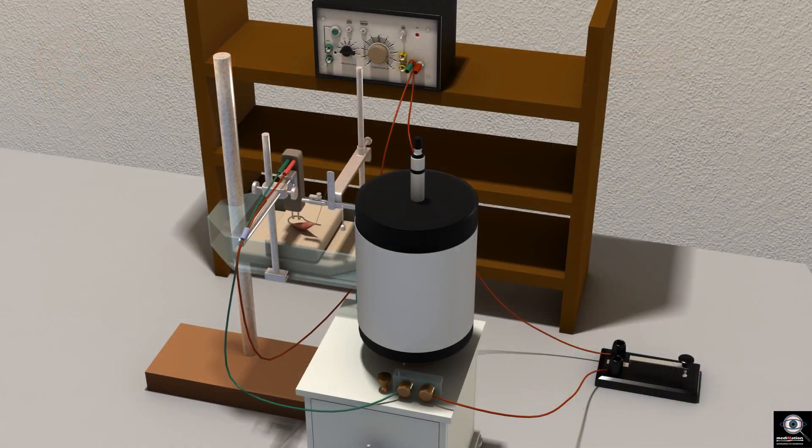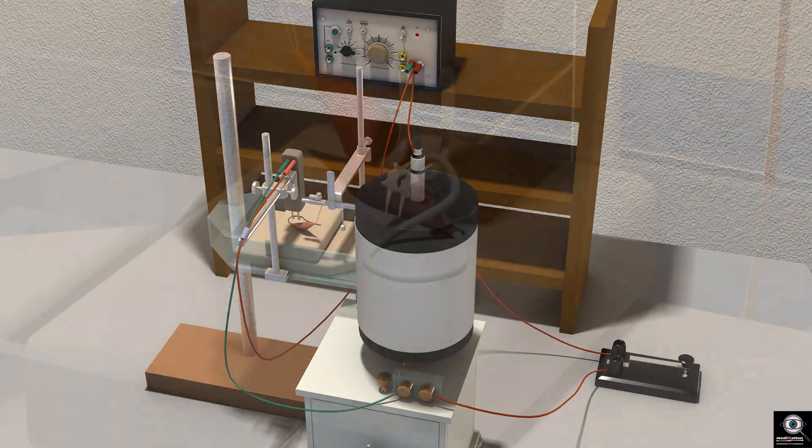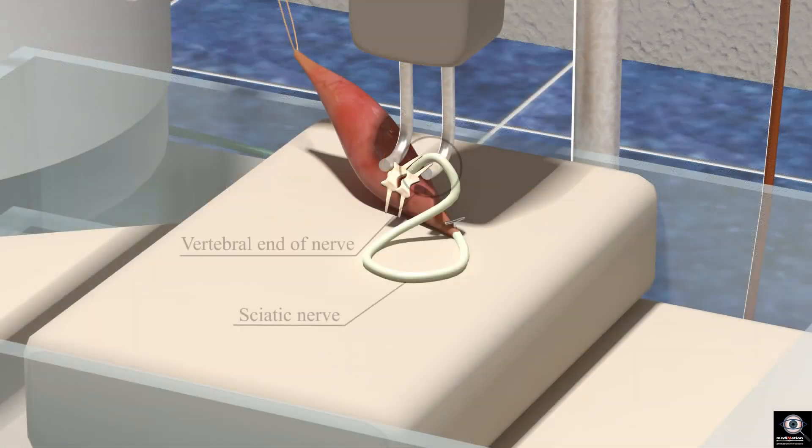Procedure: We set up the apparatus in a manner similar to the recording of the simple muscle twitch. We stimulate the sciatic nerve at its vertebral end with the stimulating electrodes.